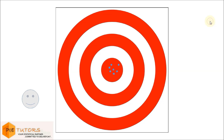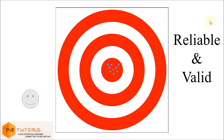The fourth person fires all his bullets and it is observed that all his bullets hit exactly at the center. The firing consistency and the firing accuracy for this person are both high. This scenario is analogous to a valid and reliable measure.